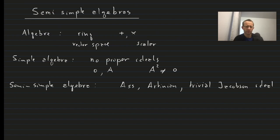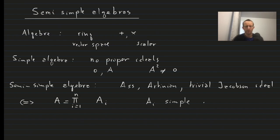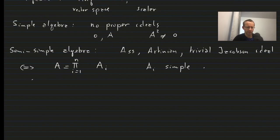Now, we won't deal with proving that this is equivalent to the algebra being a finite product of simple algebras AI. The factors AI can be found through the composition series, and the factors allow us to characterize this algebra in a slightly different way.